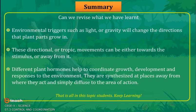Summary: Environmental triggers such as light or gravity will change the direction that plant parts grow in. These directional or tropic movements can be either towards the stimulus or away from it. Different plant hormones help to coordinate growth, development, and responses to the environment. They are synthesized at places away from where they act and simply diffuse to the area of action.